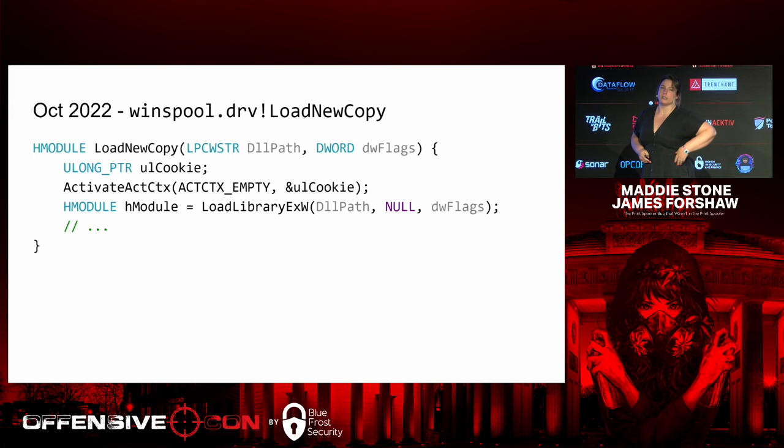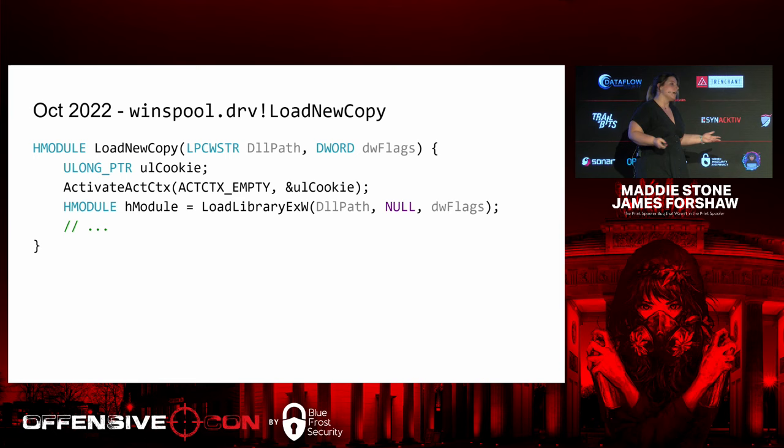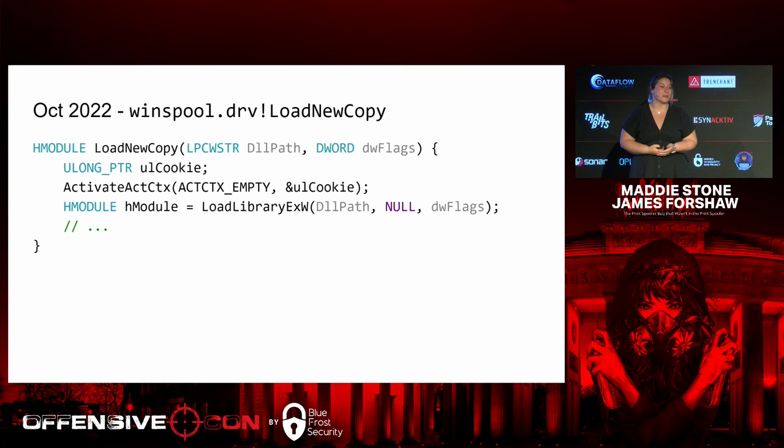I went through all the different files associated with print spooler, looking at the October version and the November version to try and figure out what was this bug and what was the fix. There was only one file that had been changed in that time period, and it was winspool.drv. And thankfully, within that file, there was only one function that had any change in it, and that was the load_new_copy function.